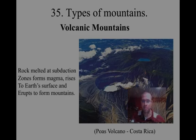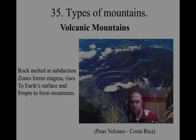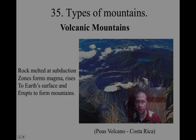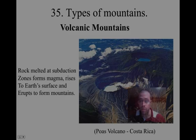We also have volcanic mountains. Rock melted at subduction zones forms magma, rises on the continental side of the subduction zone, and comes to the surface and erupts to form mountains. This is the Poás Volcano in Costa Rica. What's really interesting is the one in the foreground is active — there's barren landscape around it from more recent lava flows — whereas the one in the back has a caldera and a lake, and it's very lush with green plants, so you can tell that is not an active volcano at this point, or recently.